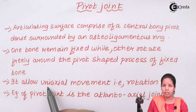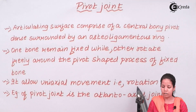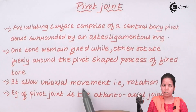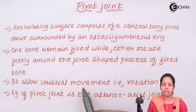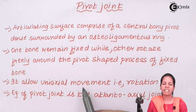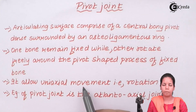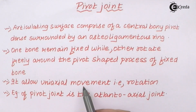Pivot joints allow rotational motion — or simply uniaxial movement. Hinge or sliding movements may be restricted at pivot joints; gliding movements are difficult to perform.